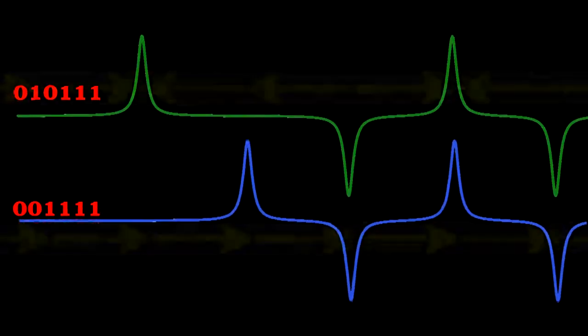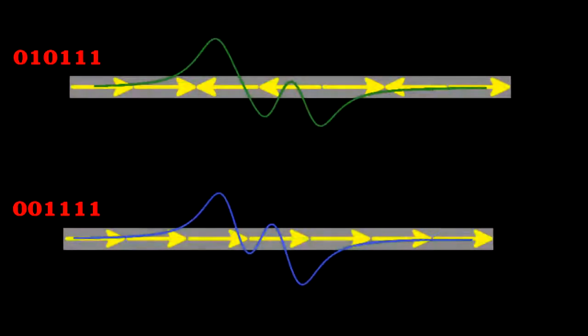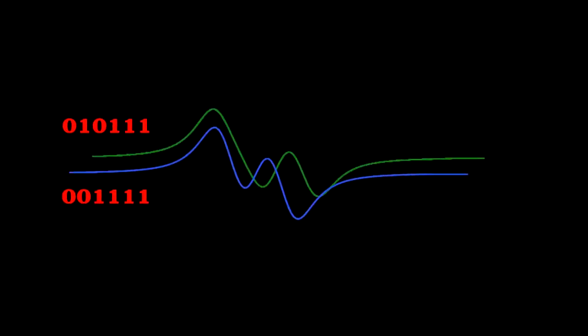Engineers, though, always work to get more and more data onto a hard drive. One way to do this is to shrink the magnetic domains, but look what happens to the voltage spikes when we do this. For each sequence, the spikes of the ones now overlap and superimpose, giving fuzzy signals. In fact, the two sequences now look very similar.